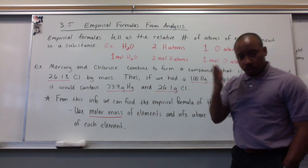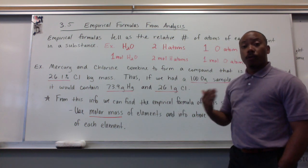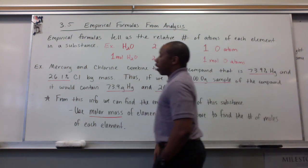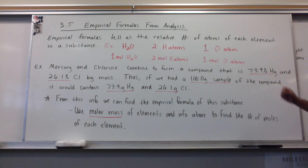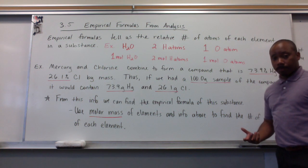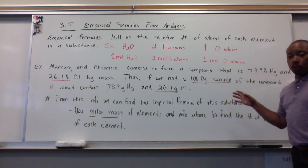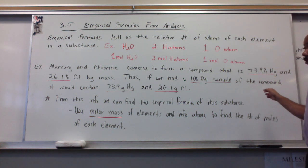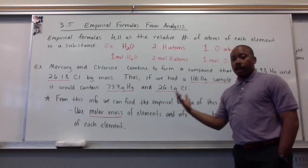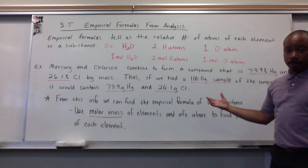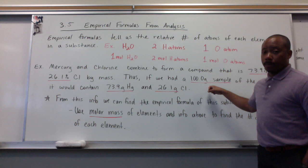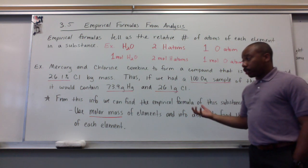Now, here's an example to get us into how we can determine an empirical formula from analysis. Our example reads, mercury and chlorine combine to form a compound that is 73.9% mercury and 26.1% chlorine by mass. That is the percent composition. Thus, if we had a 100-gram sample of this compound, it would contain 73.9 grams mercury and 26.1 grams chlorine. If we have a 100-gram sample, that's really important to assume that.